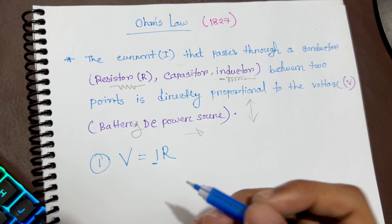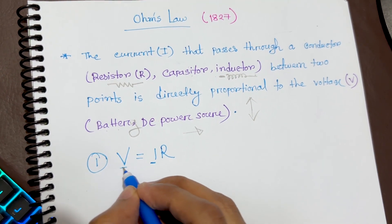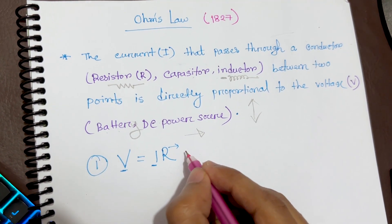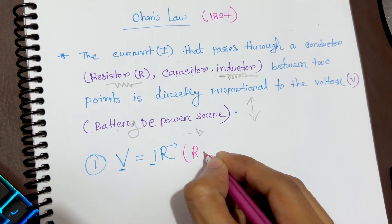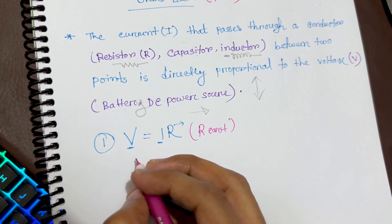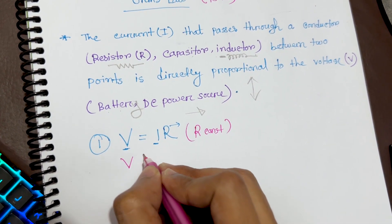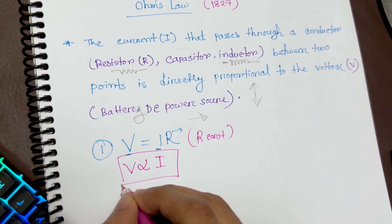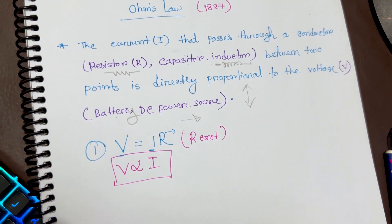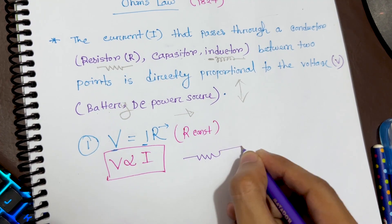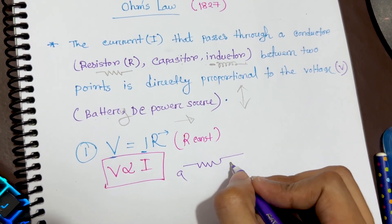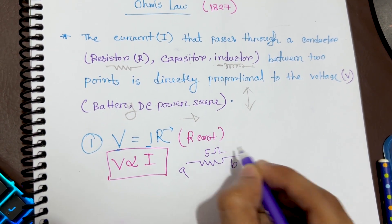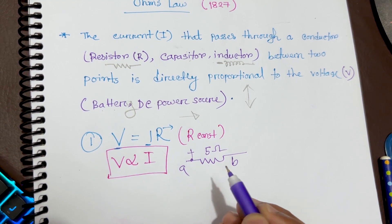The amount of voltage is proportional to the current, provided the resistor R is constant. You have to make sure that R is constant. If R is constant, we can write V is proportional to I. The current passes through the resistor — suppose this resistor has two points, point A and point B, and it is a 5-ohm resistor.